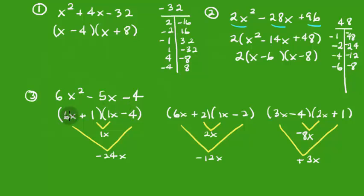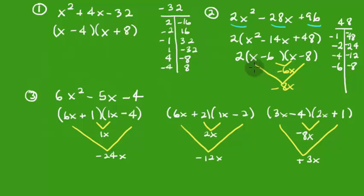These problems get harder when the leading coefficient is not 1. You have to check the middle term through trial and error. When the coefficient is 1, it's easy — you just look at the constant-term factors and you don't need all those extra steps. It's only when the coefficient of x squared is something other than 1 that it gets tricky.